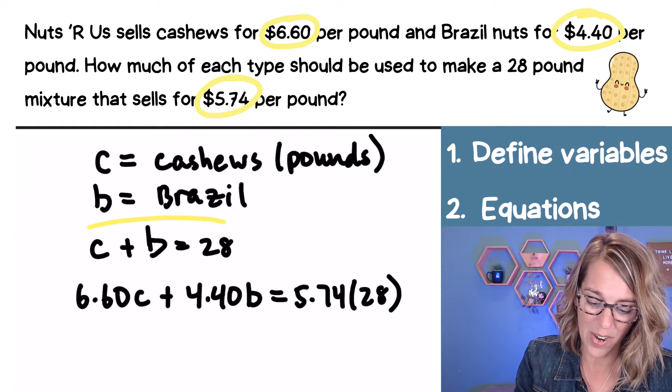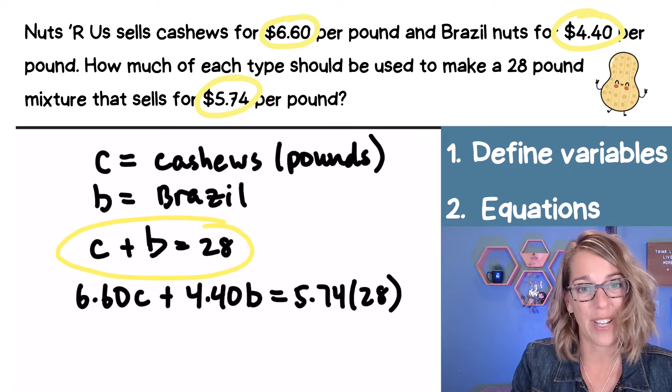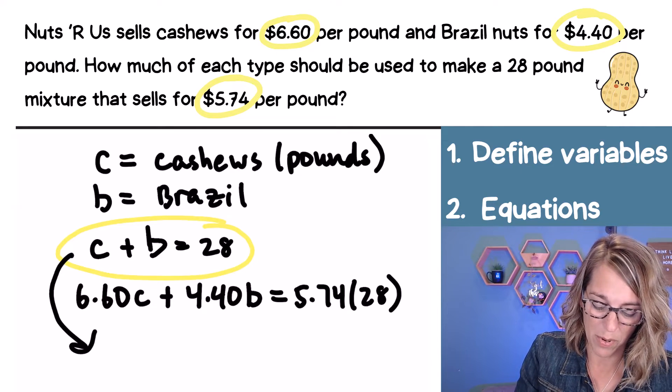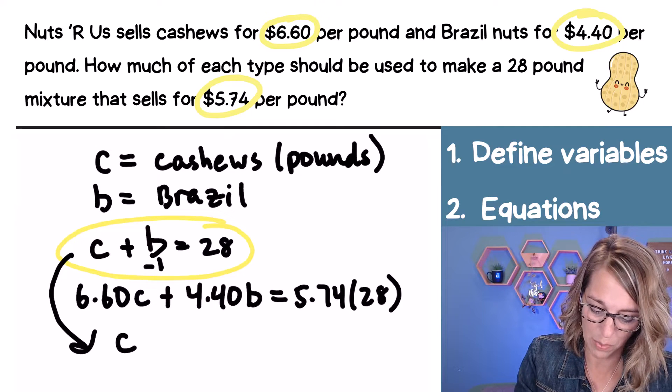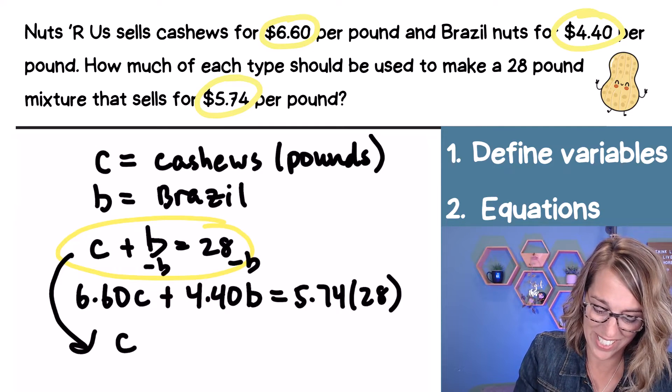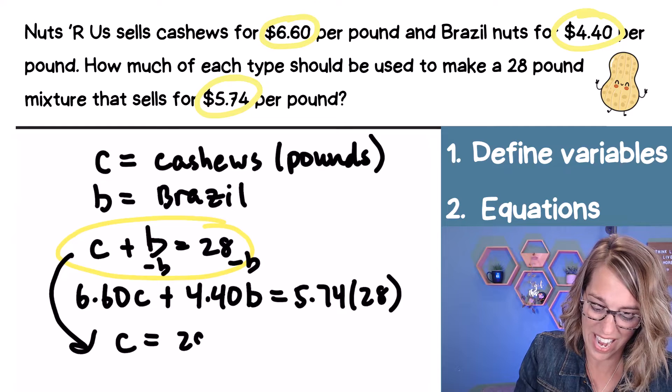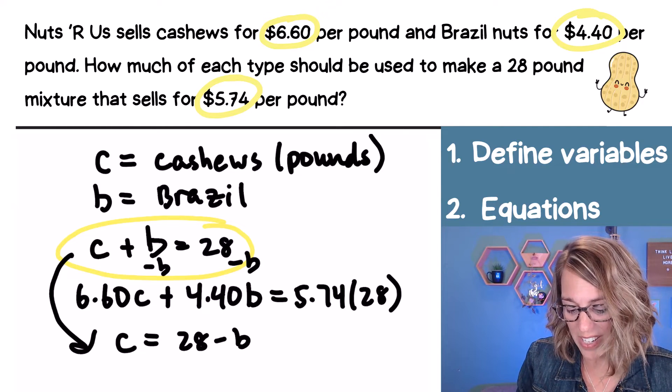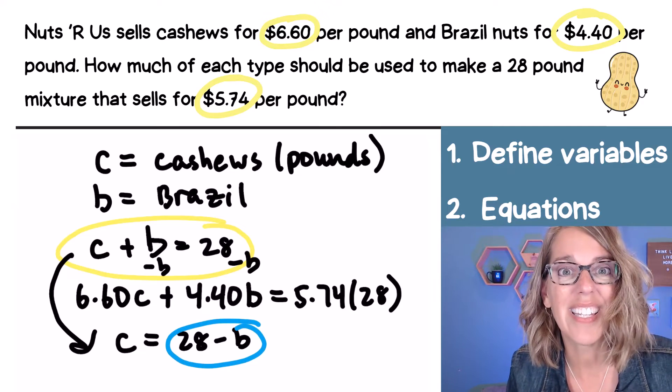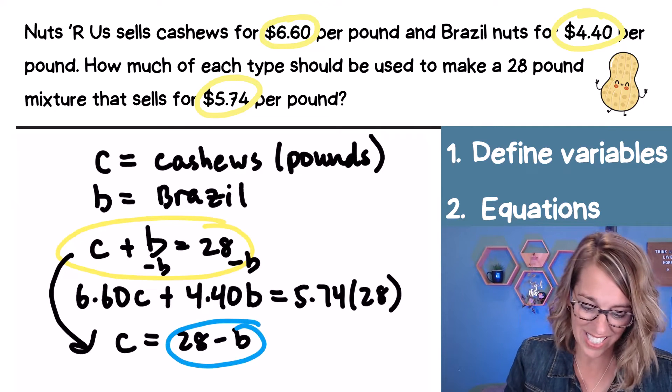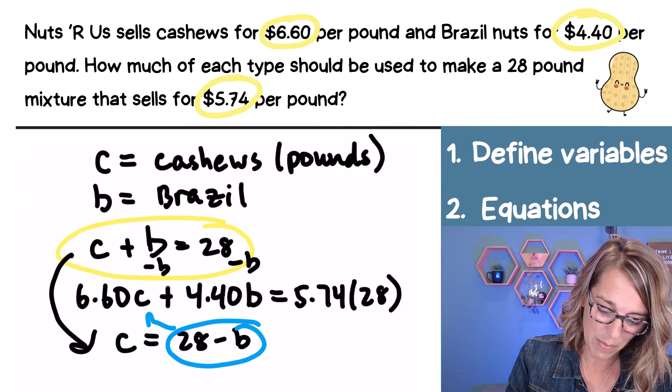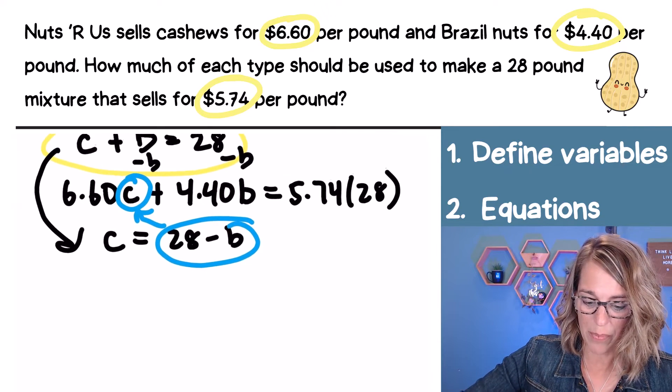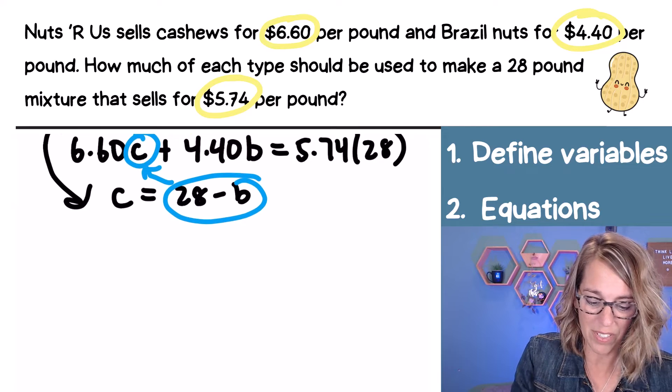I'm going to again start with that simpler equation, and let's solve for one of our variables. I can subtract a B from both sides. If I do that, I end up with C is equal to 28 minus B. So now I've got this quantity that is the same value as C. So I can put that into my other equation where I've got that C.